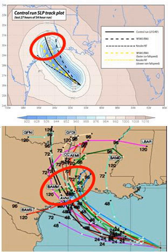A different approach seeds the clouds with a large number of small hygroscopic aerosols. The large number of CCN leads to smaller raindrops, less collision coalescence, and thus less rainout. This water is convected above the freezing level, leading to warming in the upper atmosphere and greater convection.